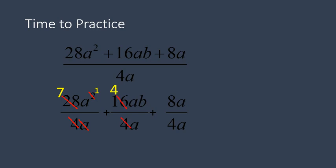And I have 1a on the bottom and 2 on top. So I'm left with 1 on the top there. 16 divided by 4 gives me 4. 4 divided by 4 is 1. I can also cancel out an a there in the second fraction. And in my final fraction I have 8a divided by 4a. 8 divided by 4 is 2. 8 divided by a is 1. So it cancels itself out.